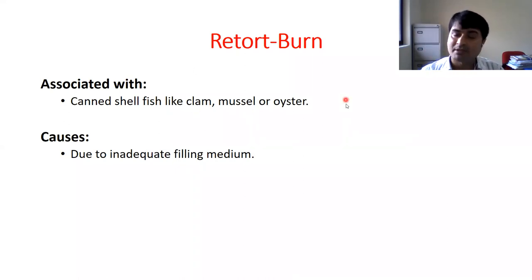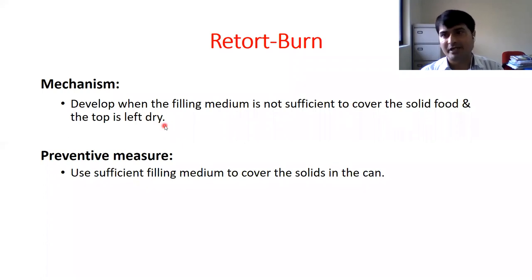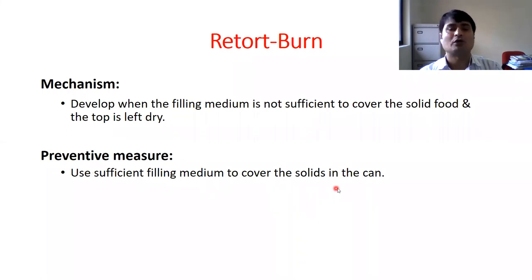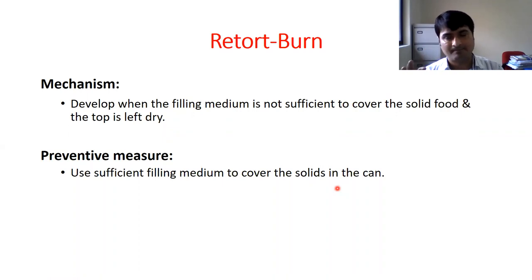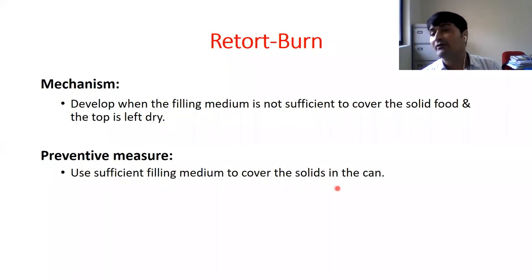When the filling medium is not sufficient to cover the solid food, the top is left dry — that means the unfilled portion will be dry because there is no filling medium. So what we have to do is use sufficient filling medium to cover the solids in the can. All the meat pieces should be completely covered with filling medium. If we are not doing this, then during thermal processing the uncovered portion will be burned.